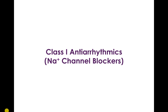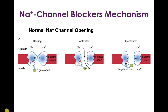Class 1 antiarrhythmics are really the most complicated out of all four classes, so once we get through this it'll all be downhill from here. The class 1 antiarrhythmics are sodium channel blockers and they're further subdivided into three subclasses: 1a, 1b, and 1c. But first let's talk about the mechanism of how sodium channel blockers work, which applies across all three subclasses.